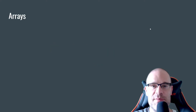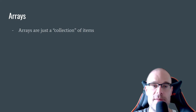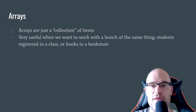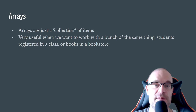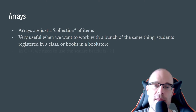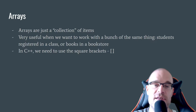Arrays in C++ are — it's easier to think of them as a collection of items that you want to work with. They're very useful when we want to work with a bunch of the same thing. For example, students registered in a class, or perhaps books in a bookstore. In C++, the big giveaway that you're working with an array is the square brackets — the open and close square brackets.